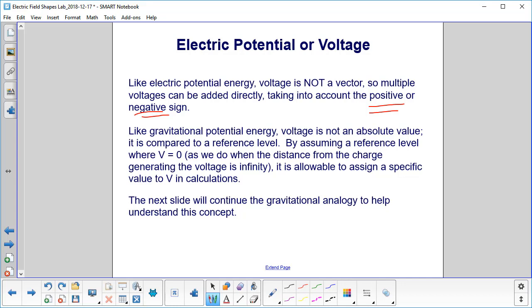Like gravitational potential energy, voltage is not an absolute value. It is compared to a reference level. But we're going to assume a reference level where V equals zero, and we will do that when the distance from a charge generating the voltage is at infinity. It is allowable to assign a specific value to V in calculations.